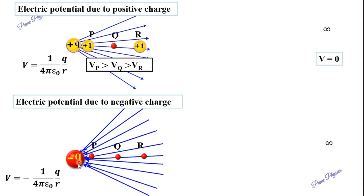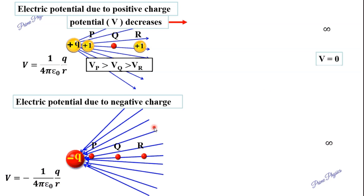Let's take the case where we have a negative point source charge. We will take a unit positive test charge and move it from infinity into the electric field. Once the unit positive charge enters the electric field, the negative charge will attract it. Work done by the external force — work done by the system — attract.